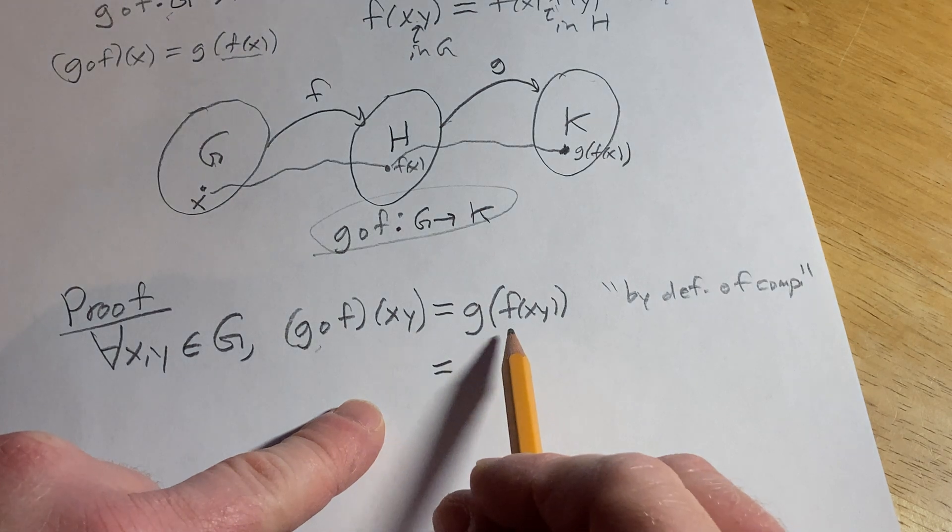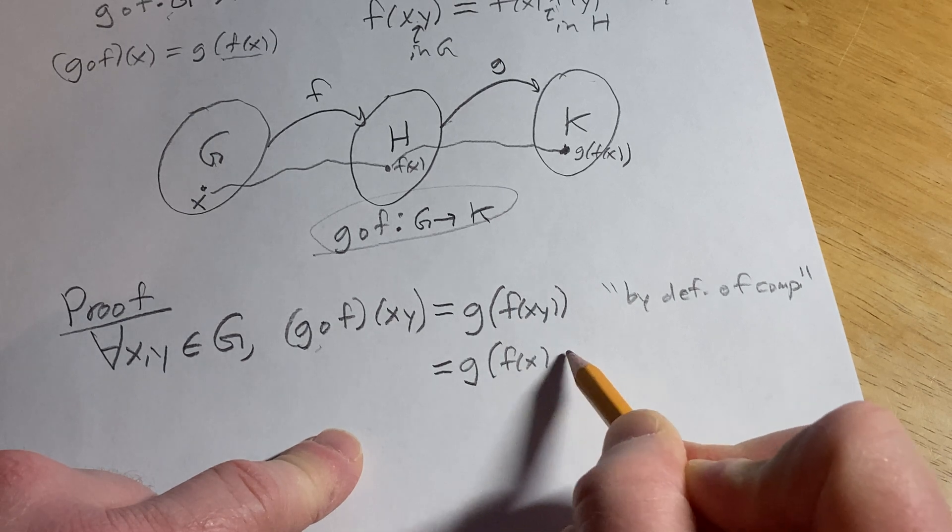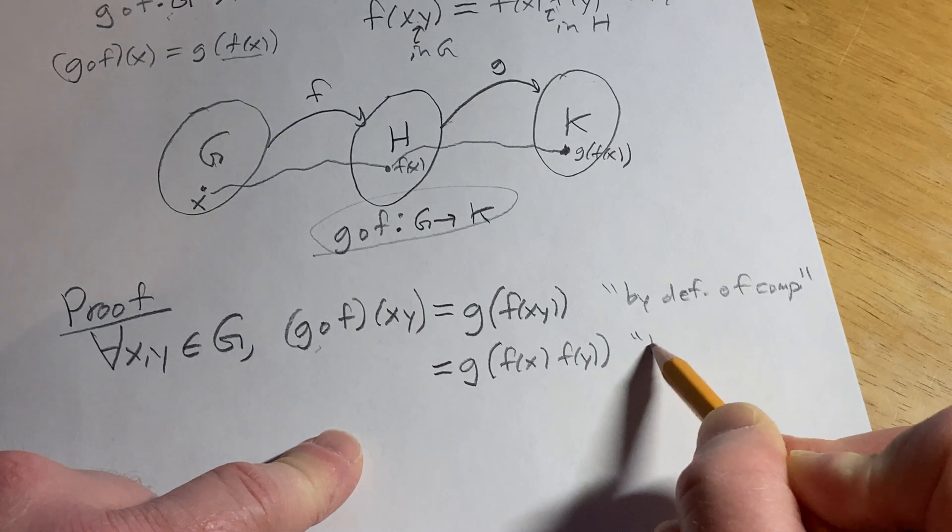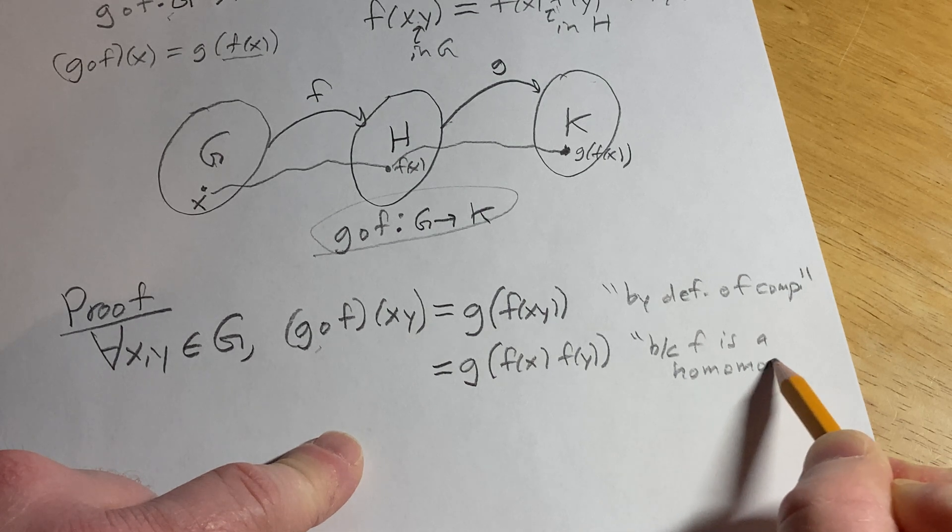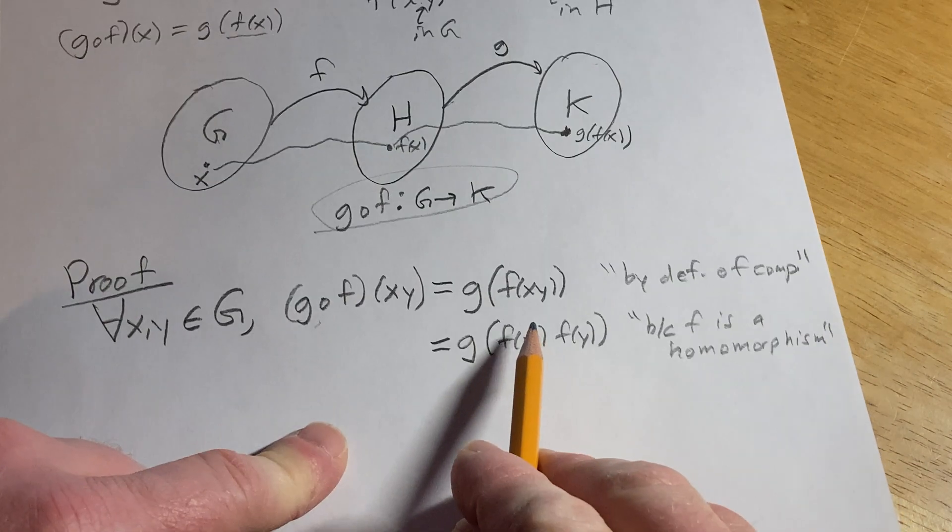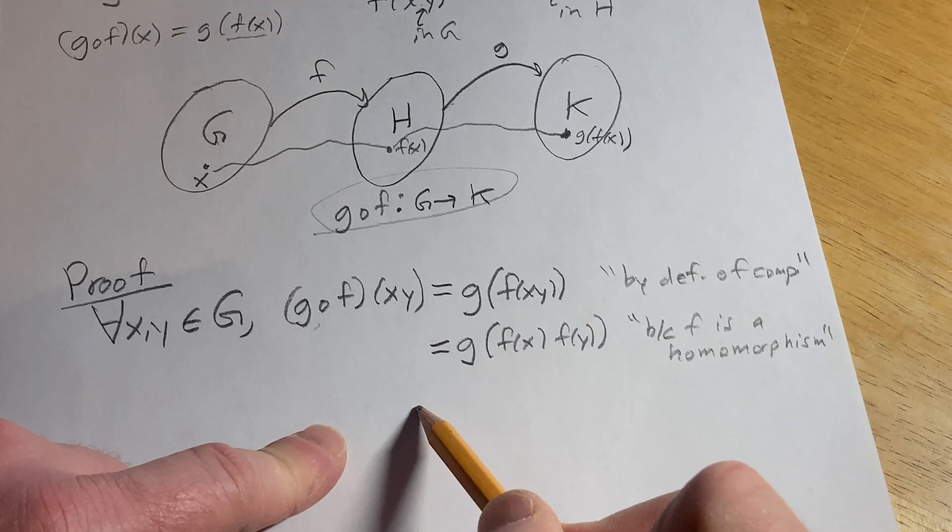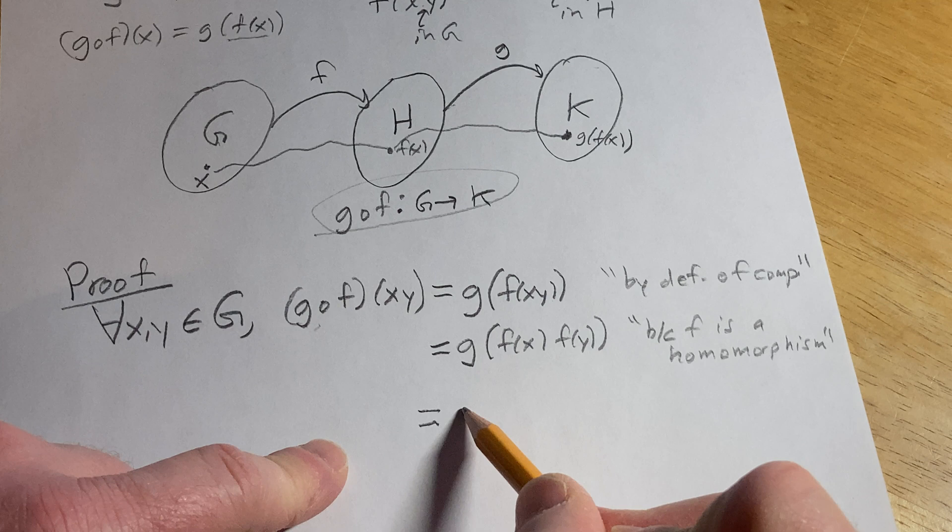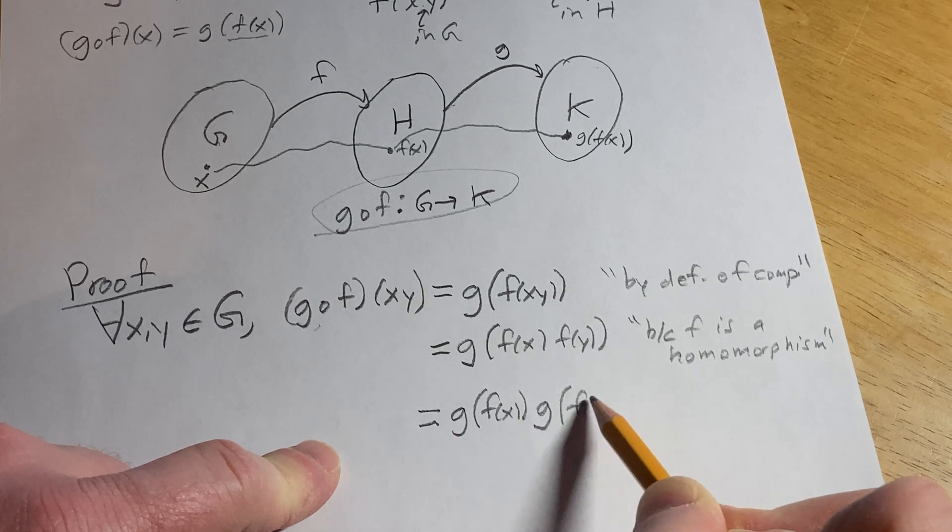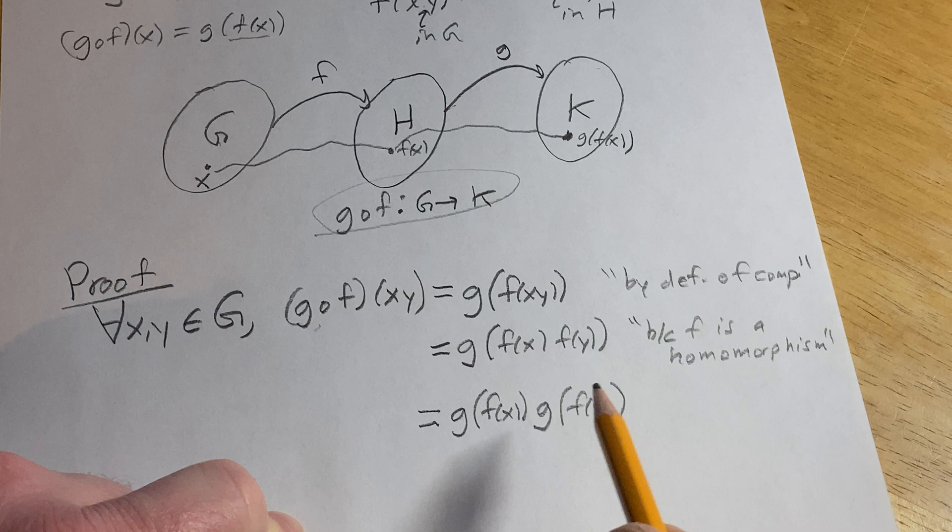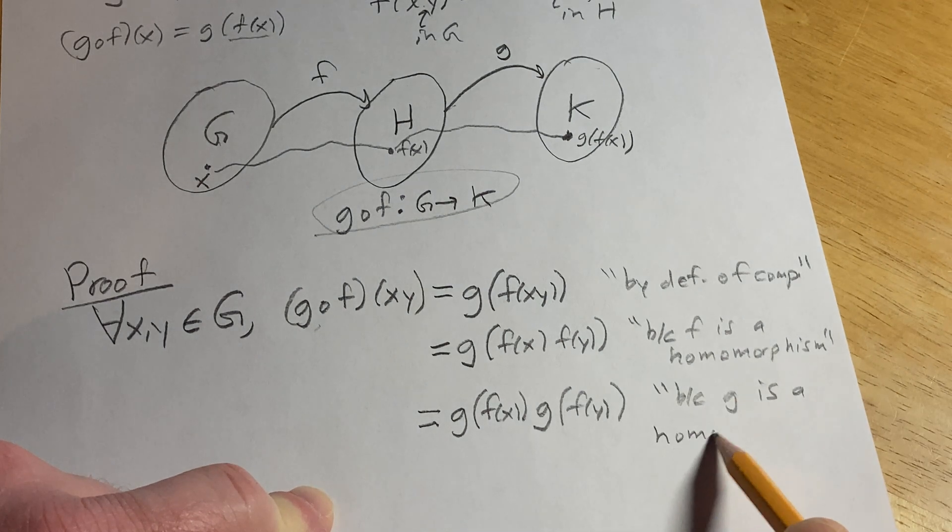Now we're going to use the fact that f is a group homomorphism. So this is g(f(x)·f(y)). And this is because f is a homomorphism. Okay, we're applying the definition of a homomorphism on f because f is a homomorphism. Now we're going to use the fact g is a group homomorphism. So this is actually g(f(x))·g(f(y)). And this is true because g is a group homomorphism. So this is because g is a homomorphism.